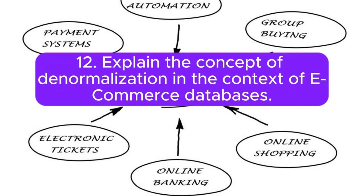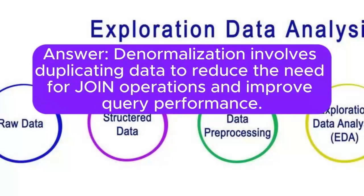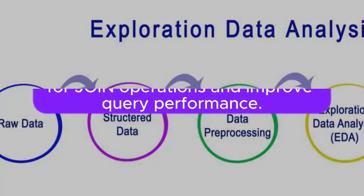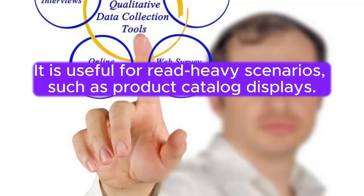Question 12: Explain the concept of denormalization in the context of e-commerce databases. Denormalization involves duplicating data to reduce the need for join operations and improve query performance. It is useful for read-heavy scenarios such as product catalog displays.